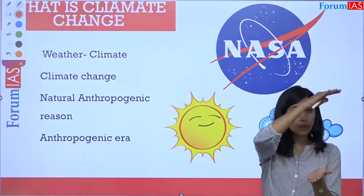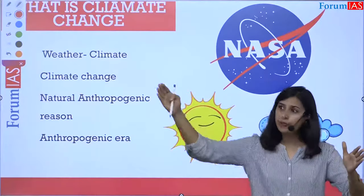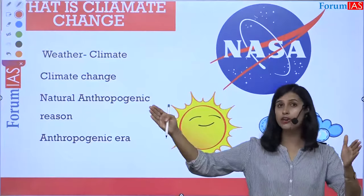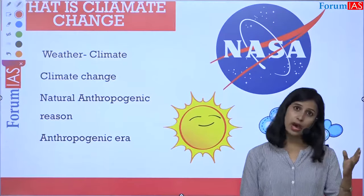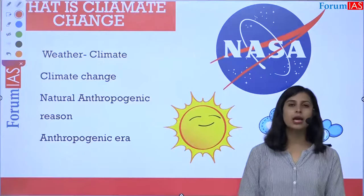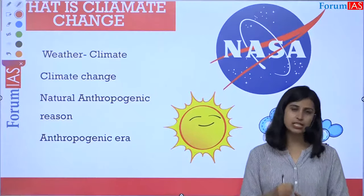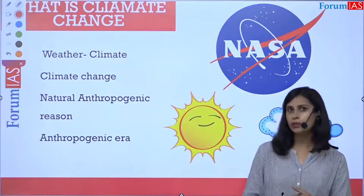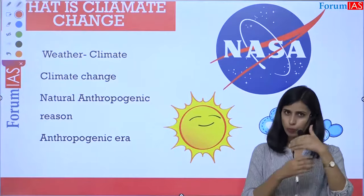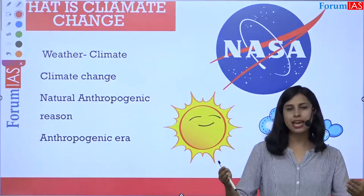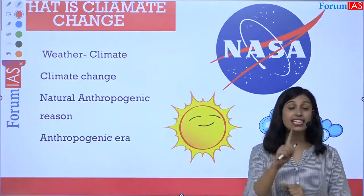If weather is consistent over a particular area over a period of time, it is called climate. In one day, the weather is seen; over a year, the climate is seen. For example, in India there are four seasons — winter, summer, pre-summer, and rainy season — and the overall seasonal changes you see constitute India's climate.